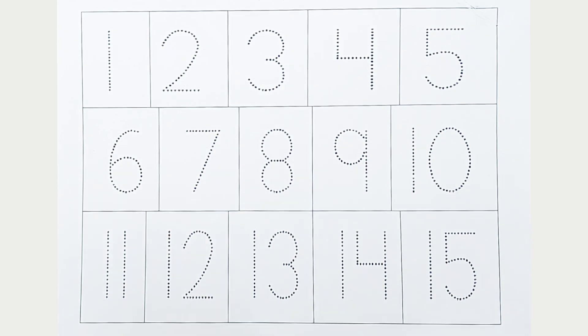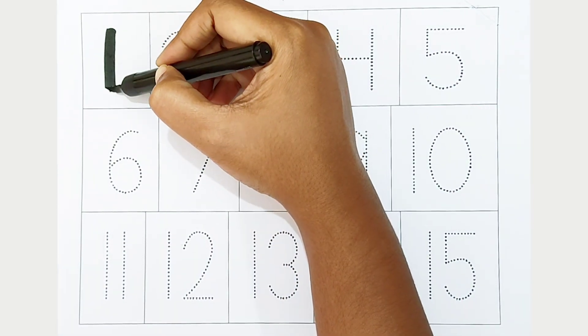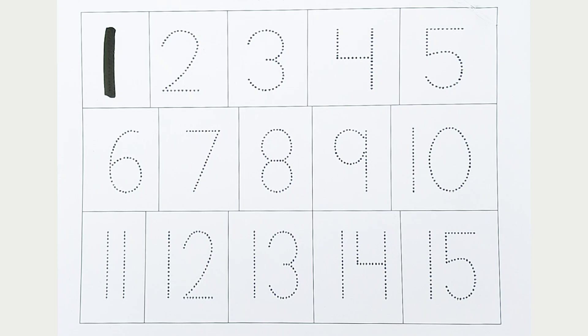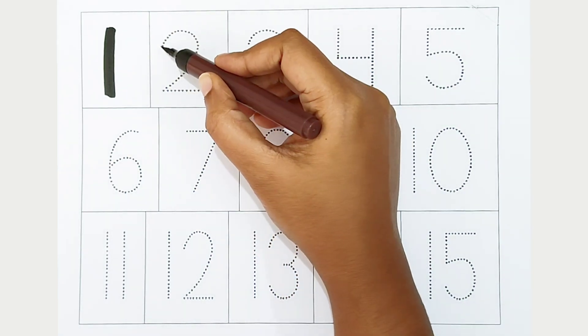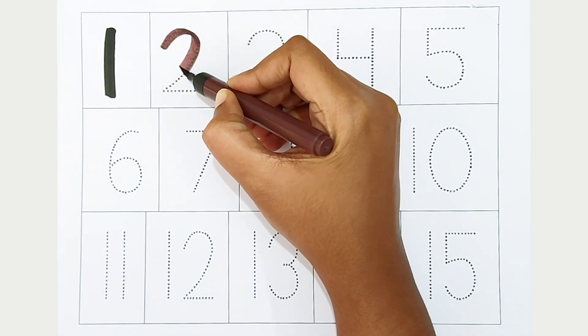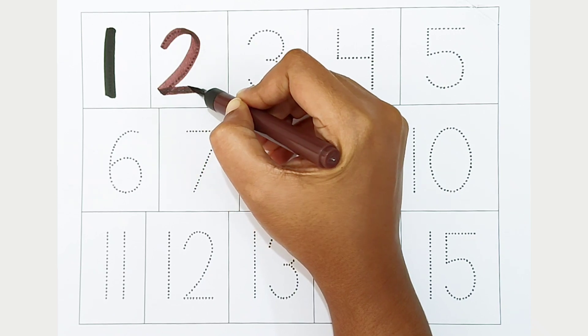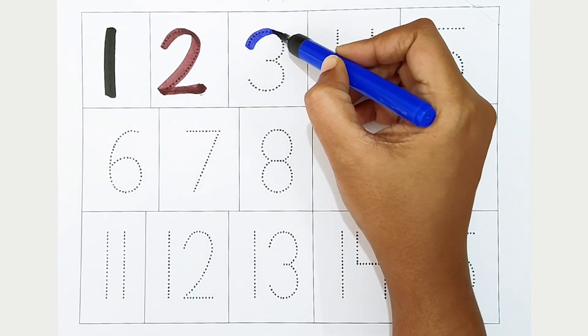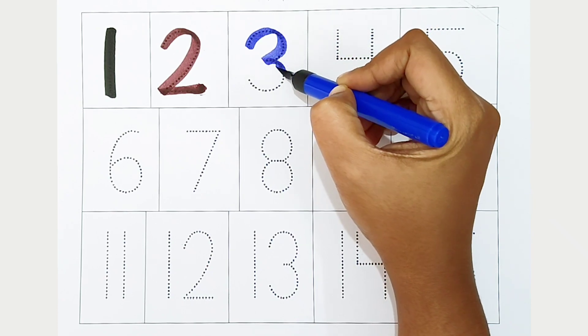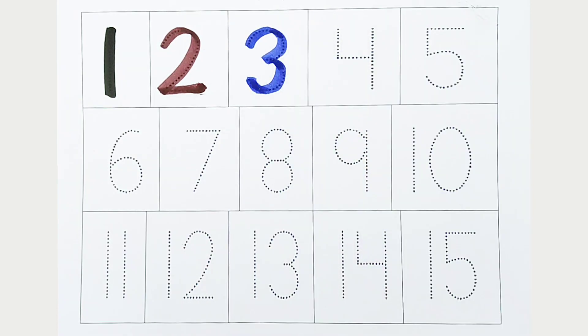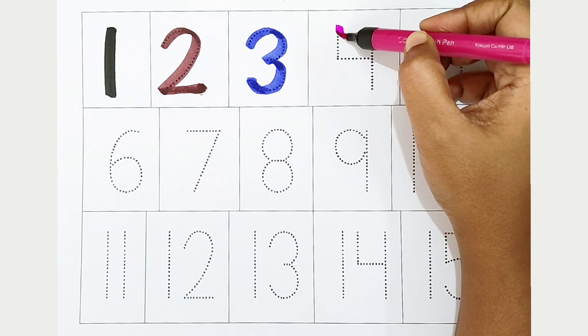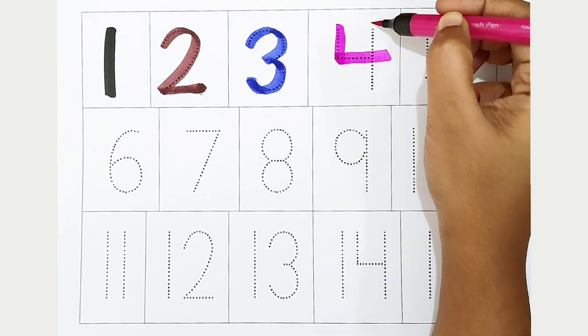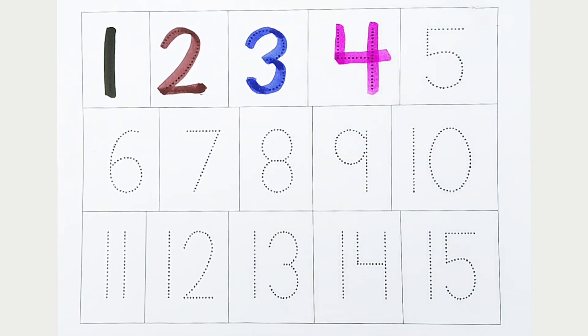One, black color. One, black color. Two, brown color. Two, brown color. Three, dark blue color. Three, dark blue color. Four, dark pink color. Four, dark pink color.